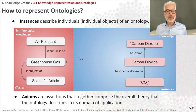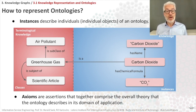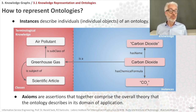Axioms are assertions that together comprise the overall theory that the ontology describes in its domain of application. For example, the statement that carbon dioxide has the chemical formula CO2 is an axiom. Everything stated in the ontology are axioms.